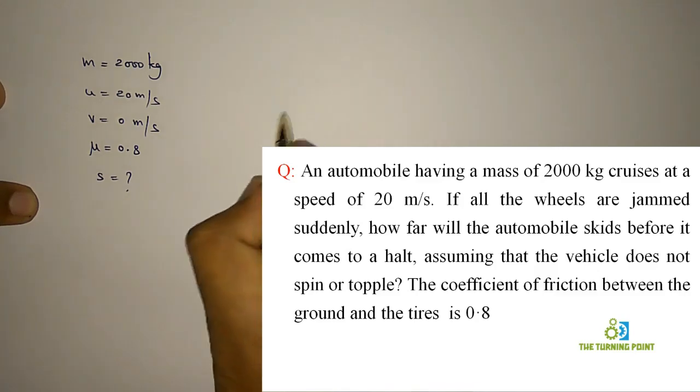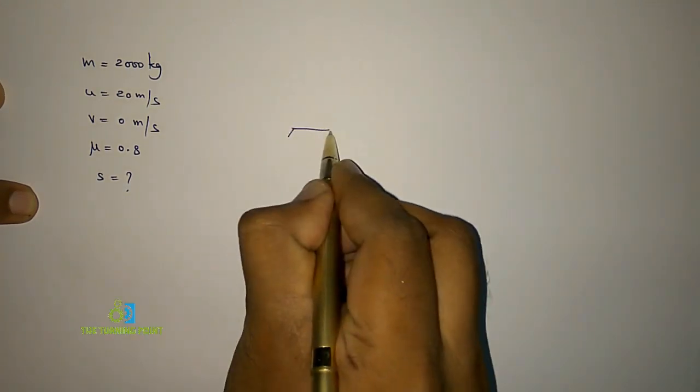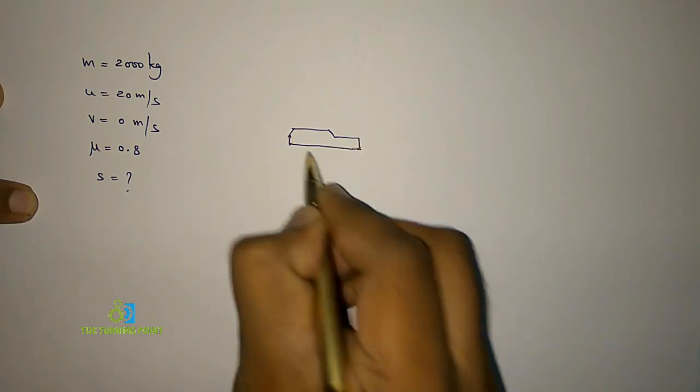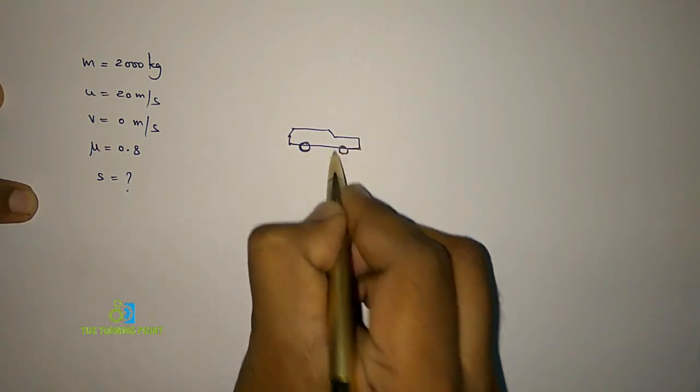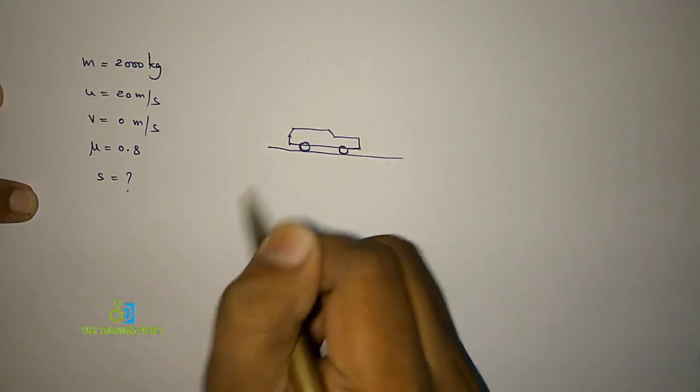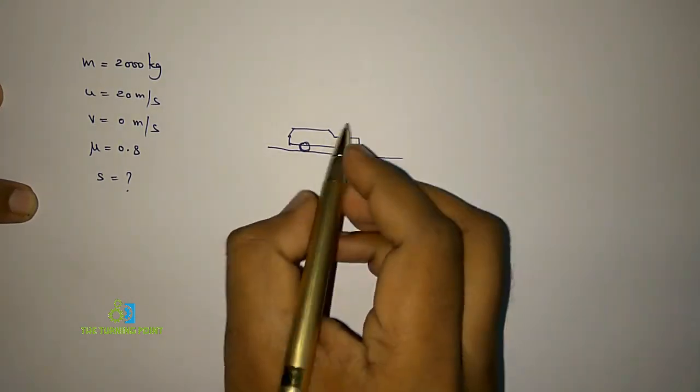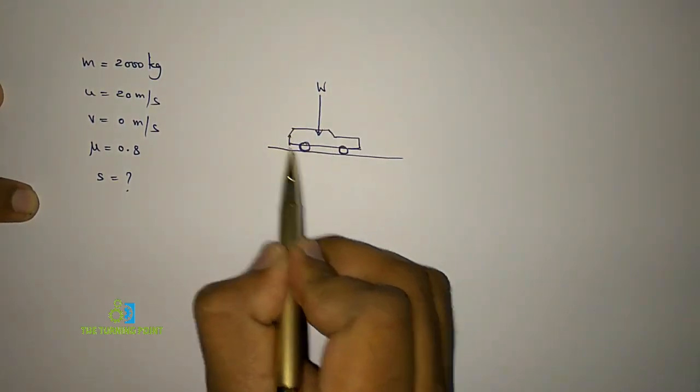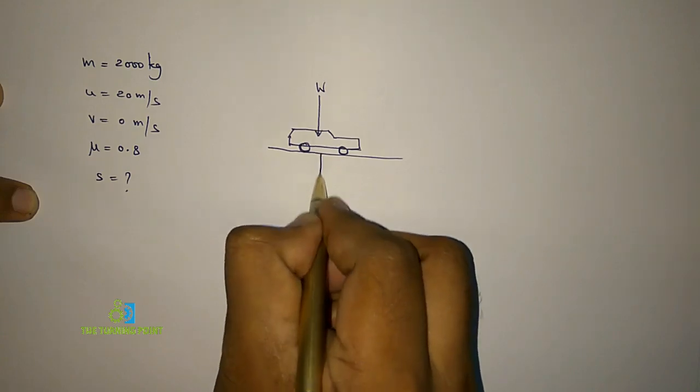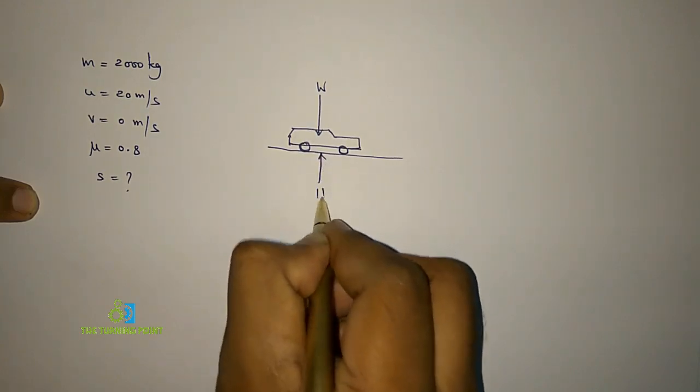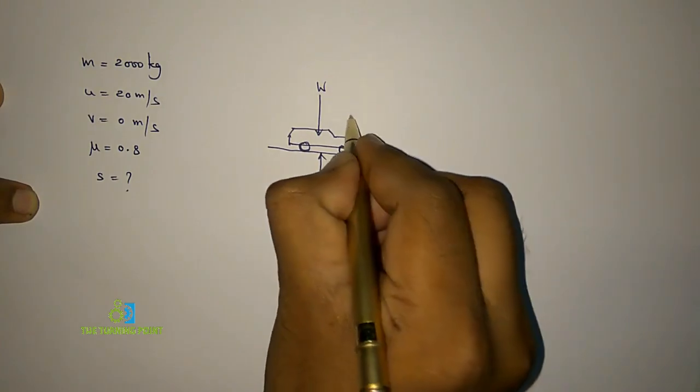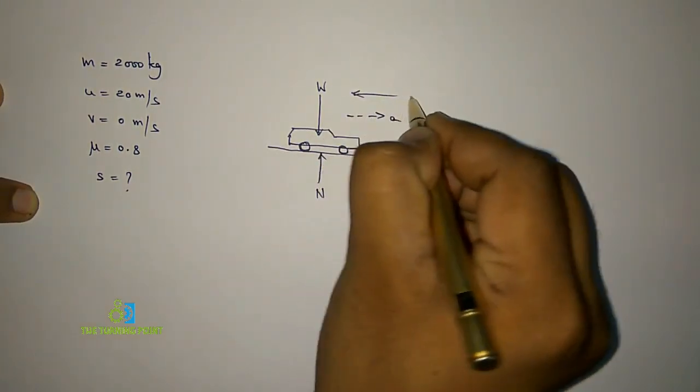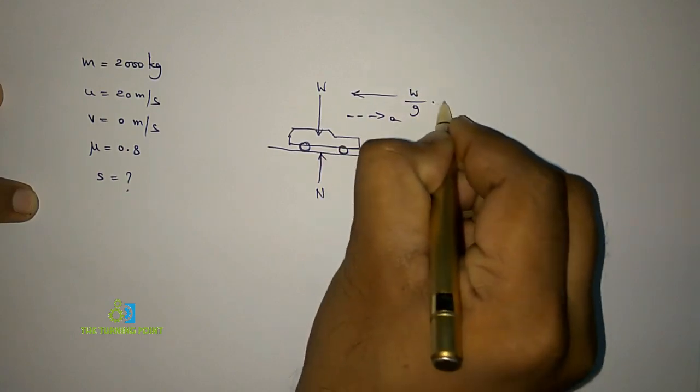So let us consider a vehicle. This is on the road. Here, for the vehicle, weight acts vertically downwards. Combining this as a single force, I am going to draw a free body diagram here. Normal reaction N is acting vertically upwards, and if it is accelerating in this direction, in the opposite direction there will be inertia force ma, or w/g times a.